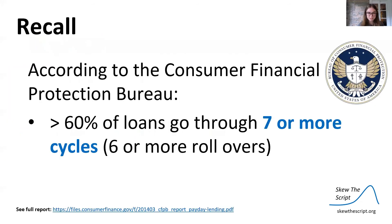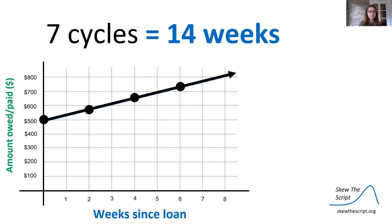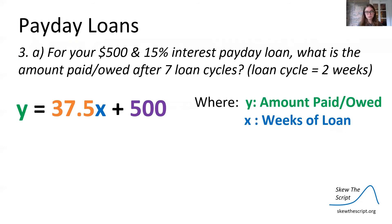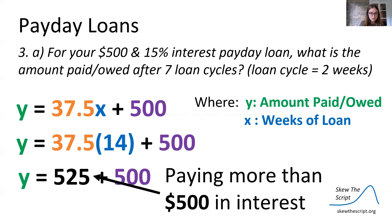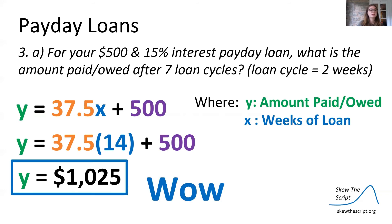Let's talk about making predictions. According to the Consumer Financial Protection Bureau, over 60% of loans go through seven or more cycles — six or more rollovers. How much will we owe after seven loan cycles? Seven loan cycles is 14 weeks. This is off the graph, so we'll use y equals 37.5x plus 500. Plugging in 14: 37.5 times 14 equals 525. Already we're paying more than $500 in interest — more than 100% of the initial loan. So 525 plus 500 is $1,025.